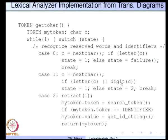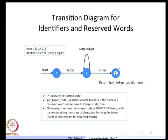The first transition diagram we will consider is the one for reserved words and identifiers. This is a fairly simple and straightforward transition diagram. We start in state 0, then on a letter we reach state 1. We keep consuming letters and digits in state 1. When we finally get some other symbol other than a letter or digit, we reach state 2, where we return the token code — either for the reserved word or for the identifier itself.